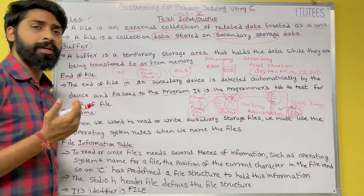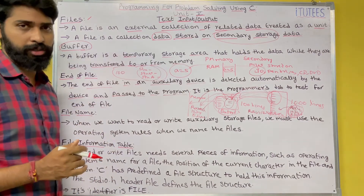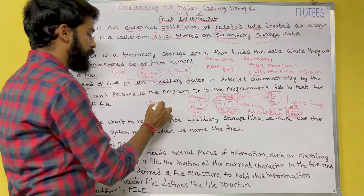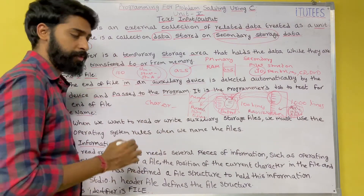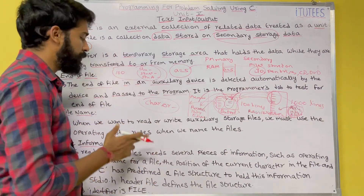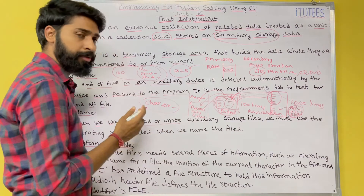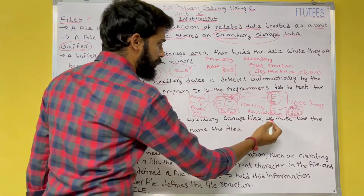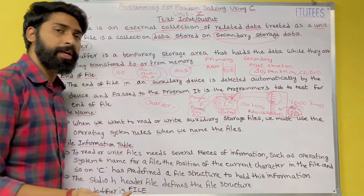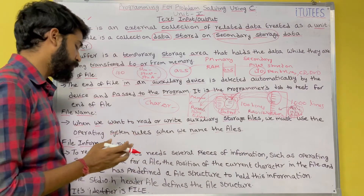File names — when you are creating any file using C programming, you follow the rules of the operating system. For example, a file name must start with a character or underscore. When we want to read or write auxiliary storage files, we must use the operating system rules when we name the files. Whether you read or write data, in both cases you follow the OS rules for file names.